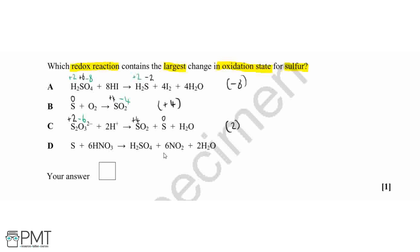Looking at the last equation, we've got our elemental sulfur on the left with an oxidation state of zero. And then on the right, we've got sulfuric acid again, where we worked out above that our sulfur has an oxidation state of plus six.